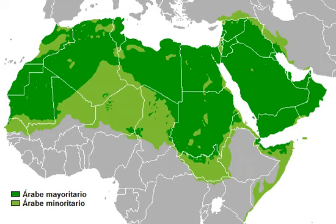Much of the new vocabulary is used to denote concepts that have arisen in the post-classical era, especially in modern times. During the Middle Ages, Literary Arabic was a major vehicle of culture in Europe, especially in science, mathematics and philosophy. As a result, many European languages have also borrowed many words from it.